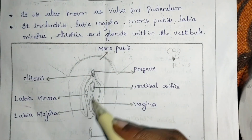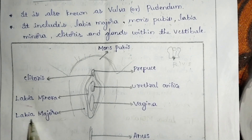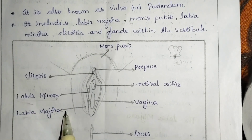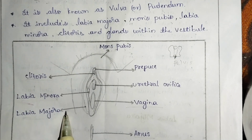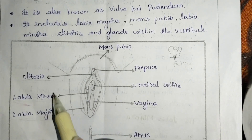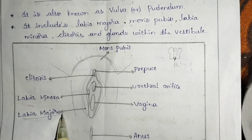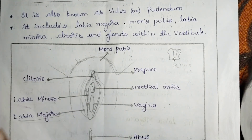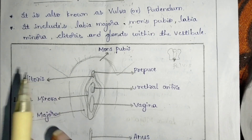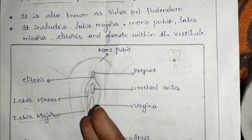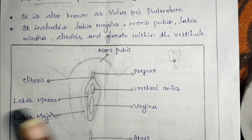Next, labia minora and labia majora. The outer, bigger lips are known as labia majora; the inner, small lips are known as labia minora. Labia majora is also known as greater lips; labia minora is also known as lesser lips or smaller lips. Labia majora has fat deposits and hair follicles present outside; labia minora doesn't have any fat deposits or hair follicles.